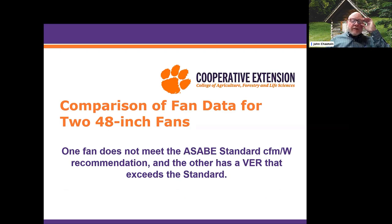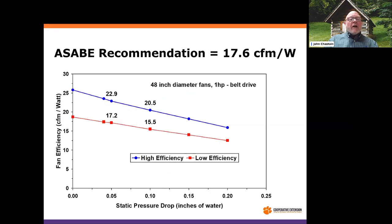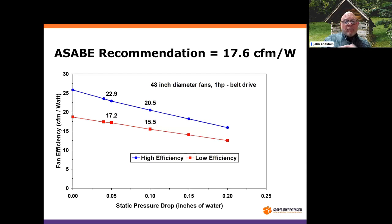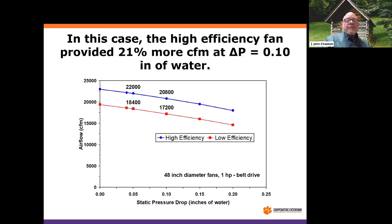Let's look at a quick comparison using two 48-inch fans — one does not meet the minimum ASABE standard for VER, and one actually exceeds it. The ASABE guideline says 17.6 CFM per watt at one-tenth of an inch static pressure is needed to consider a 48-inch fan energy efficient. The low efficiency fan on this chart shows 15.5 CFM per watt — well below the minimum. The high efficiency fan I'm comparing it to is 20.5 CFM per watt. We also see more airflow at one-tenth inch for the high efficiency fan: 20,800 versus 17,200 CFM.